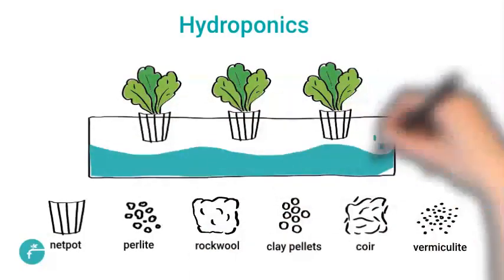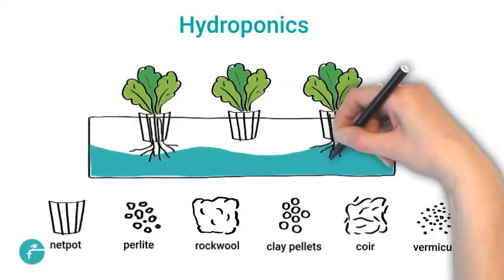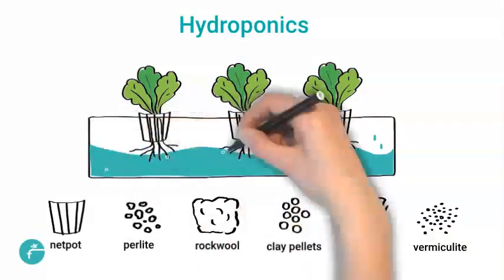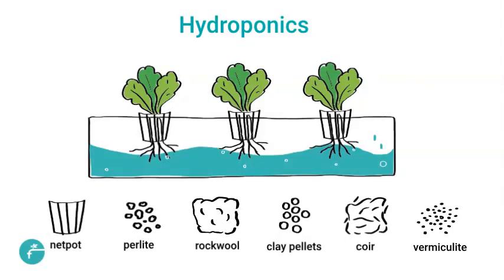The basic premise behind hydroponics is to allow the plant's roots to come into direct contact with the nutrient solution while also having access to oxygen, which is essential for proper growth.